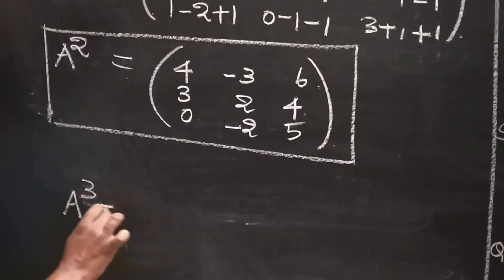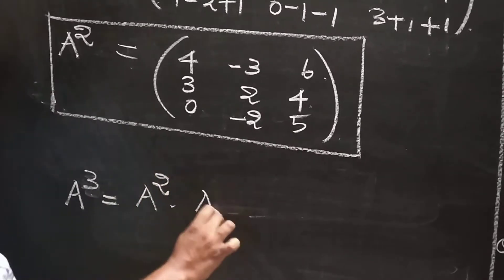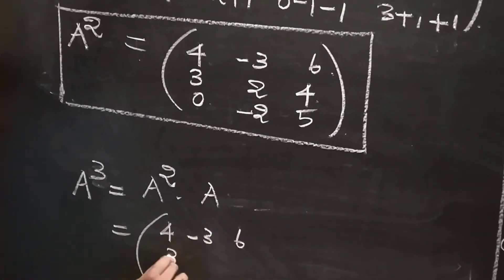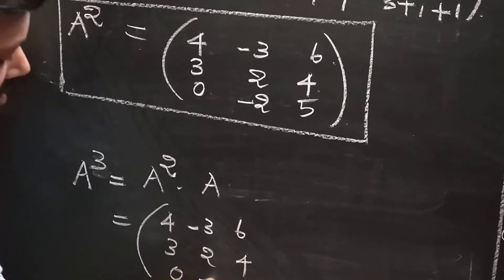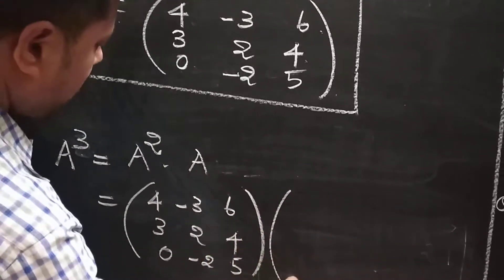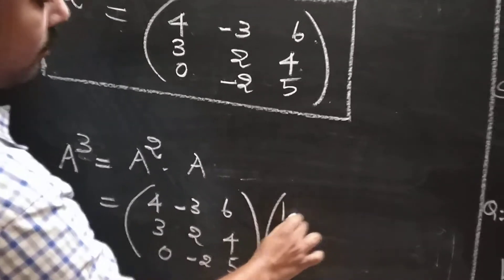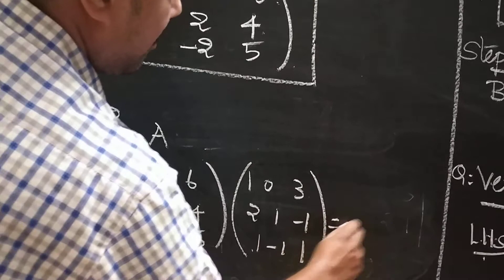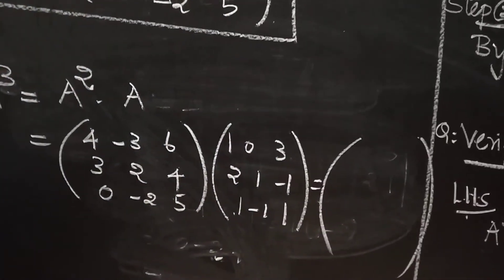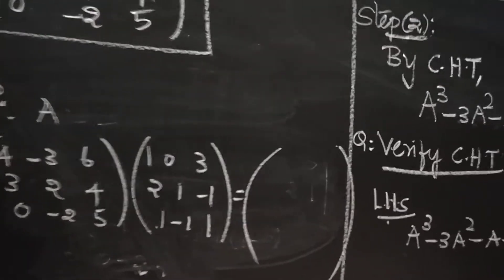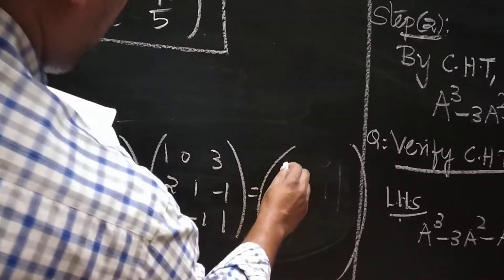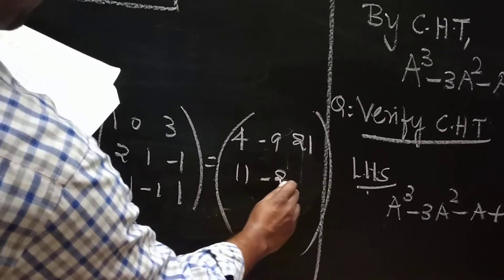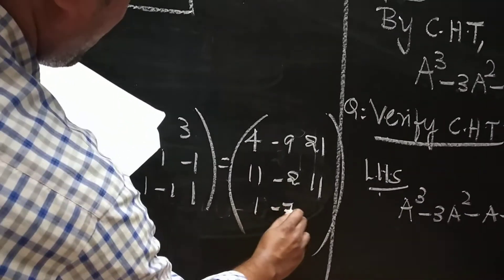Similarly find A cubed, which is A squared into A. A squared is: 4, minus 3, 6; 3, 2, 4; 0, minus 2, 5. Multiplying by A gives A cubed equals: 4, minus 9, 21; 11, minus 2, 11; 1, minus 7, 7.